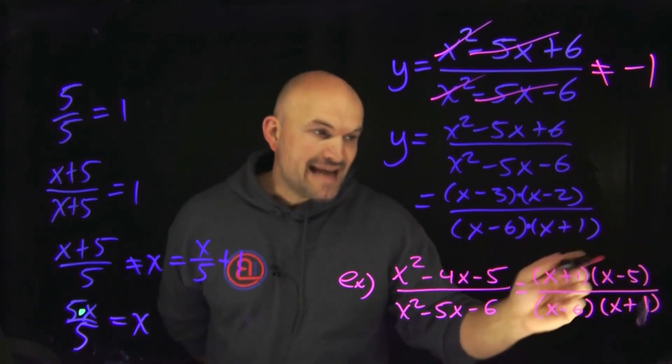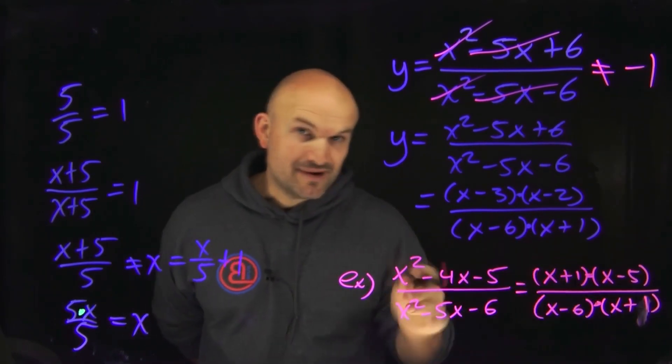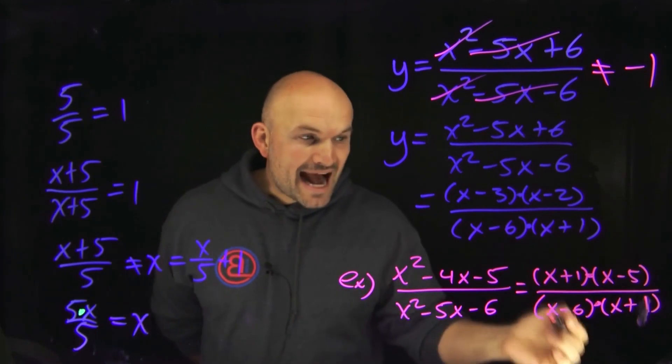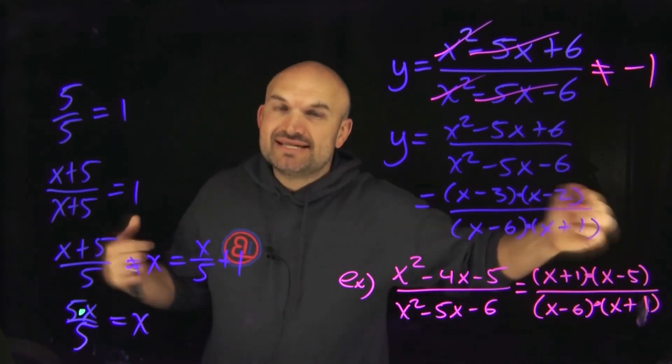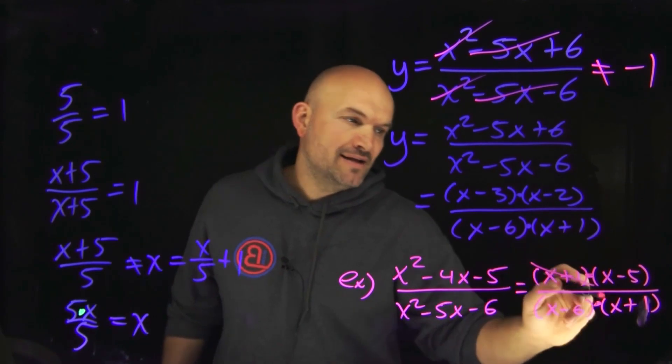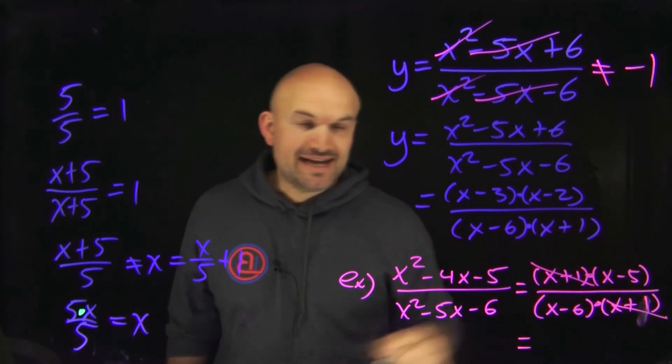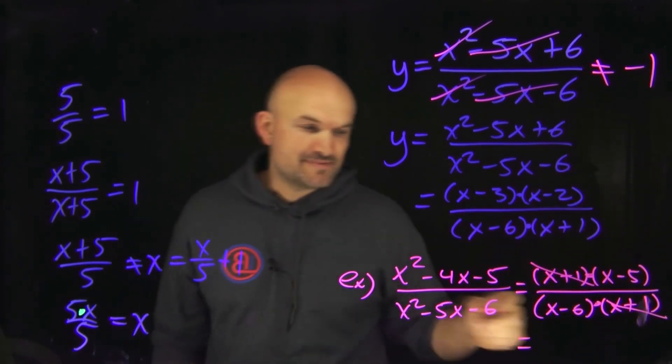Now what I want you to be able to see is now I have my terms separated by multiplication, right? Factoring. Thank you very much. And now I have an x plus 1 in the numerator as well as an x plus 1 in the denominator. So now I can apply that division property and get a final answer of x minus 1 all over x minus 6.